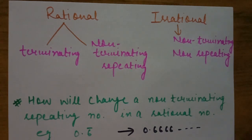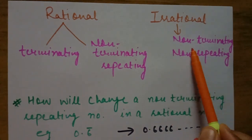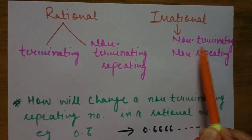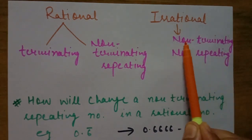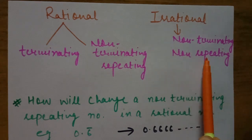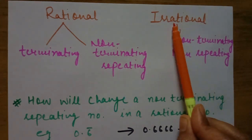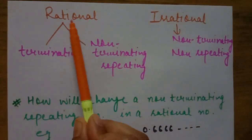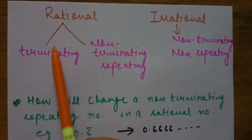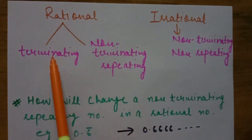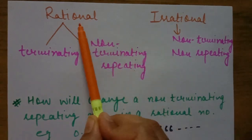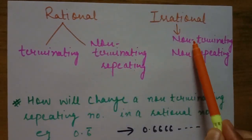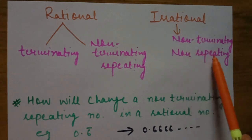A number whose decimal expansion is terminating or non-terminating repeating is a rational number. A number whose decimal expansion is non-terminating non-repeating is called an irrational number.